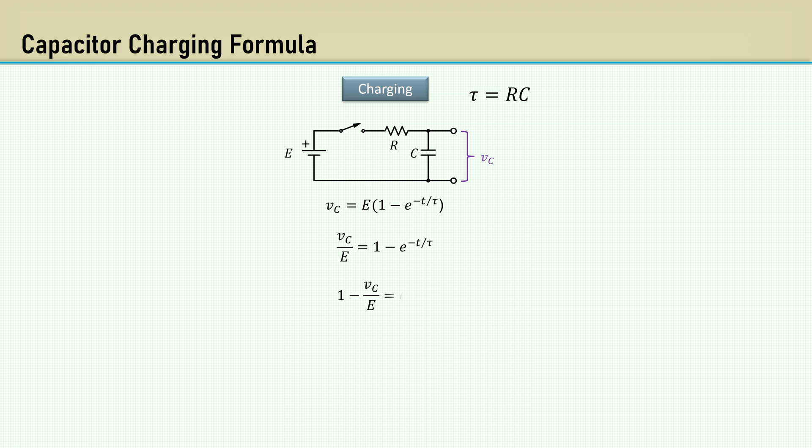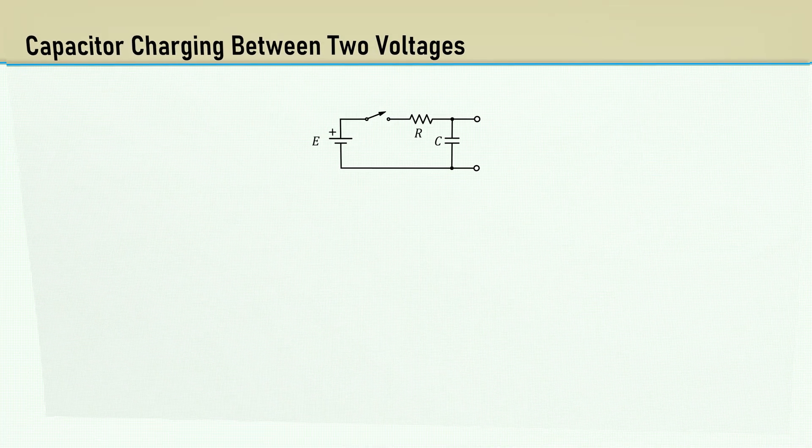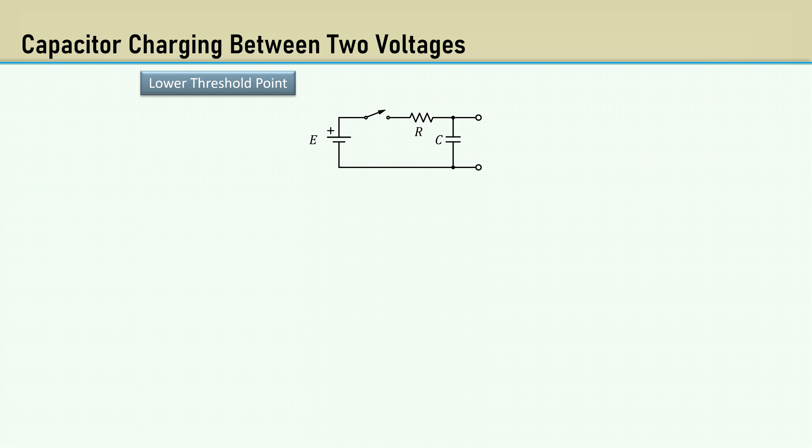Let's rearrange to solve for time. Let's determine the time it takes to get to the lower threshold voltage, one-third V+. Rearrange to solve for Vc over E. Then stick it into our equation for time. This gives us minus the natural log of two-thirds tau.